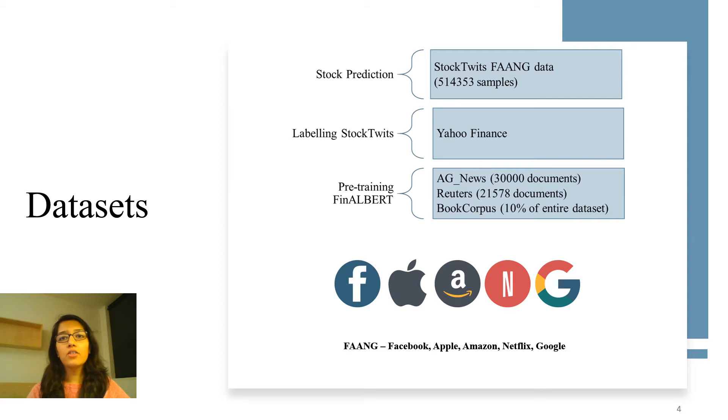So for one year data the total number of records in the FANG data set is 514,353. Since this data set was unlabeled and there was no gold standard available for it we labeled it using the Yahoo Finance data which contains stock related prices.